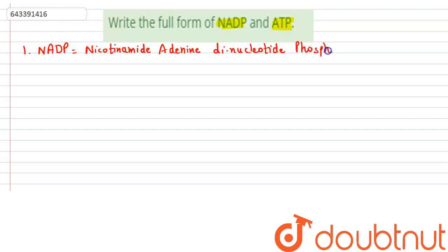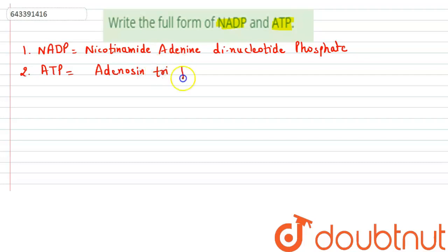So this is NADP. The second is ATP, so that is: A for Adenosine, Triphosphate. So here it is — Adenosine Triphosphate.